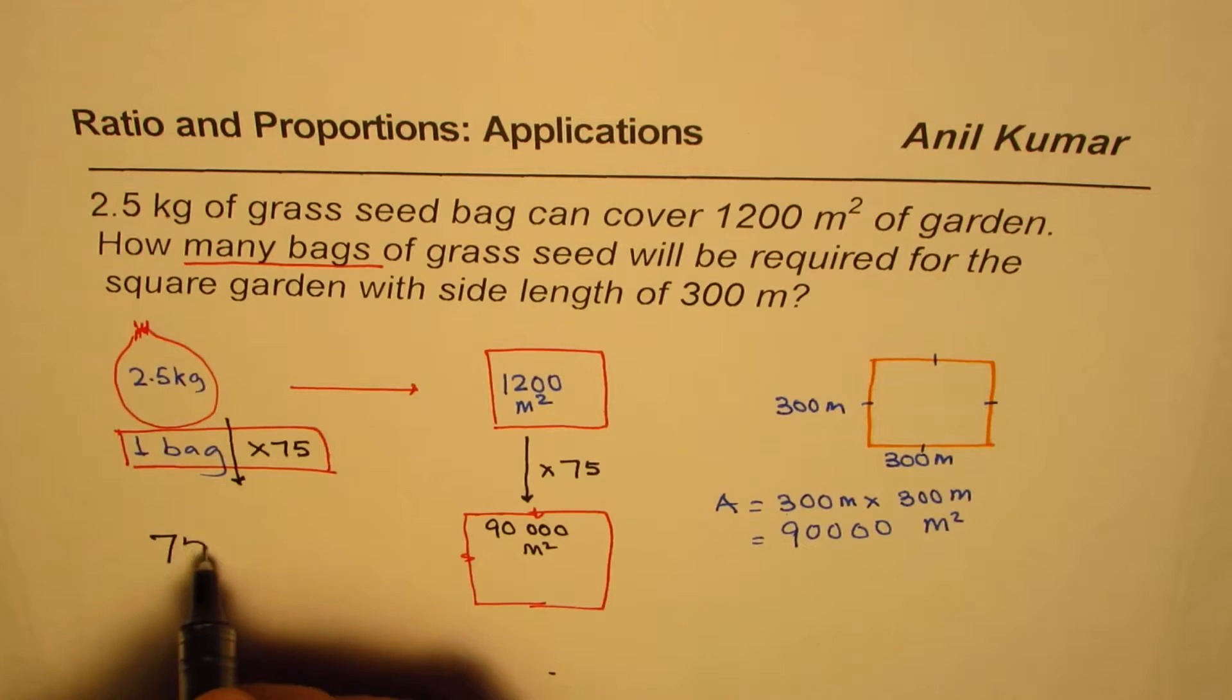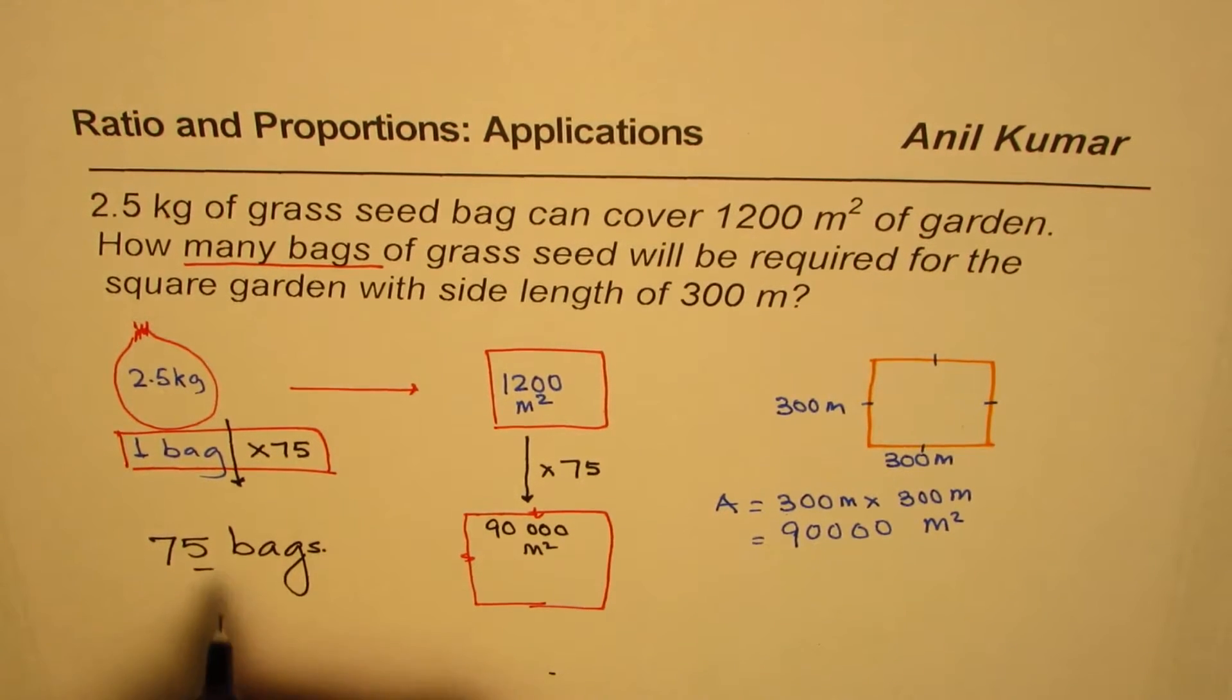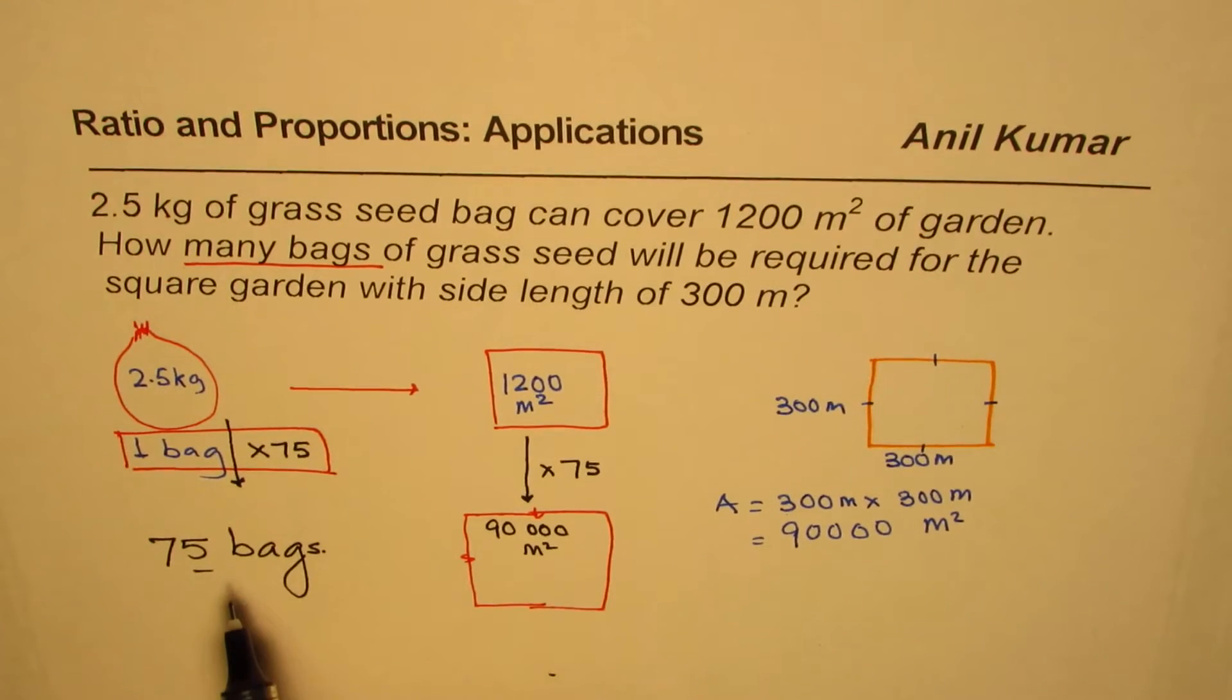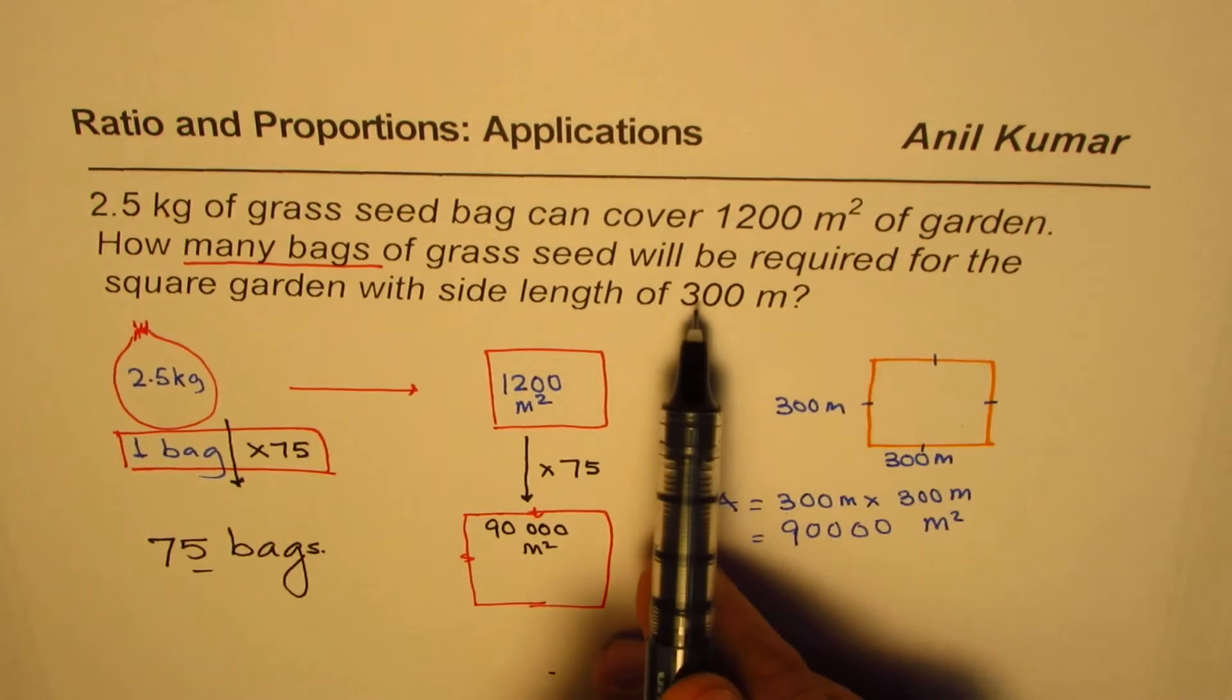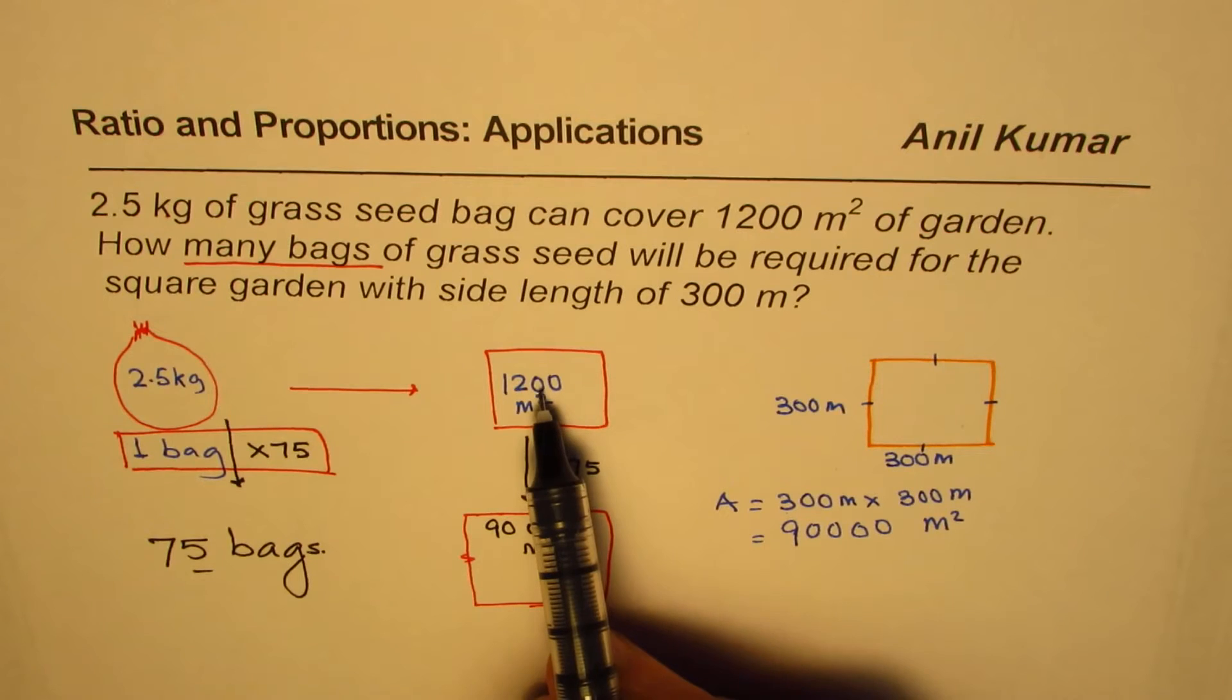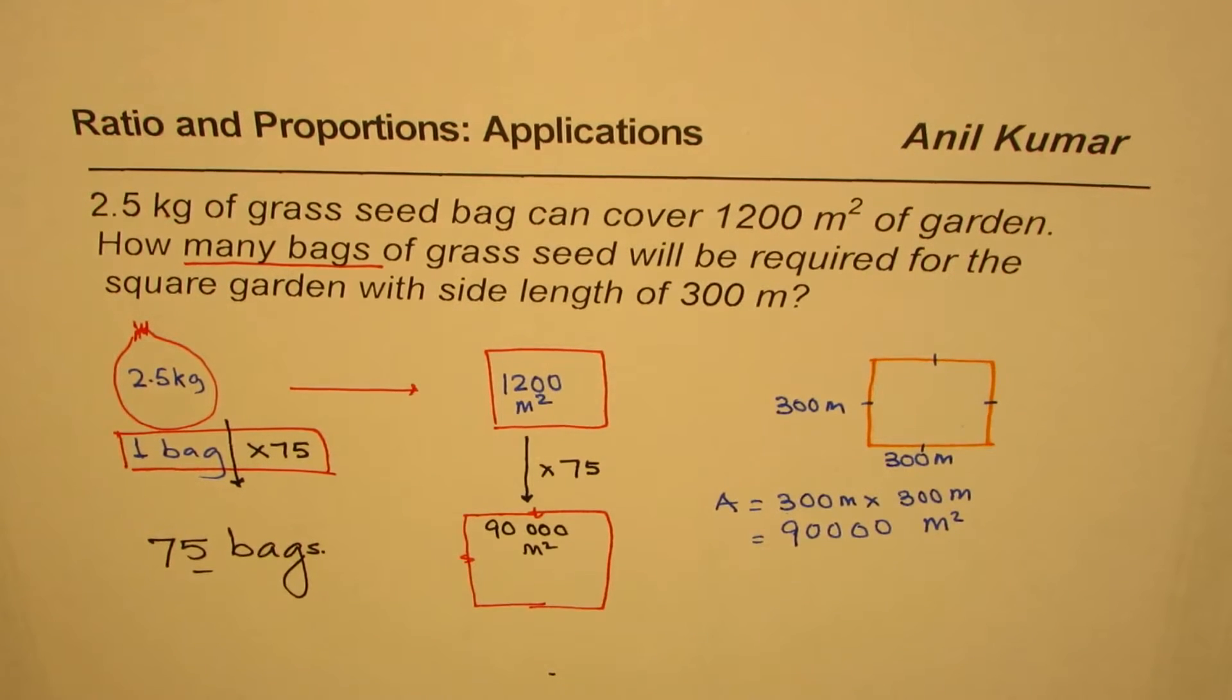We have to only multiply the bags—the number of bags. So this part, one bag by 75, and so you need 75 bags. Do you get the concept? So the only catch here is at times you may just multiply 2.5 kg. The other catch is you may not find the area but just think about 300 meters divided by four. So don't do those mistakes.